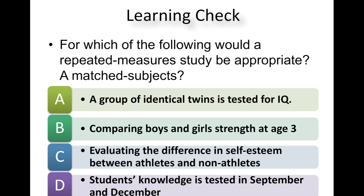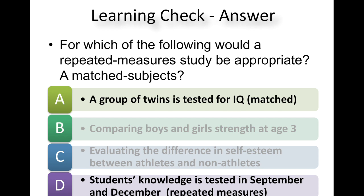So quick learning chat. For which of the following would a repeated measure study be appropriate? A group of identical twins, comparing boys or girls, evaluating the difference, or student knowledge. So hopefully you said either a group of twins tested for IQ or students' knowledge tested in September and December. So one of them is a matched studies design and one is a repeated measures design. But they're both considered part of this chapter, if you will.